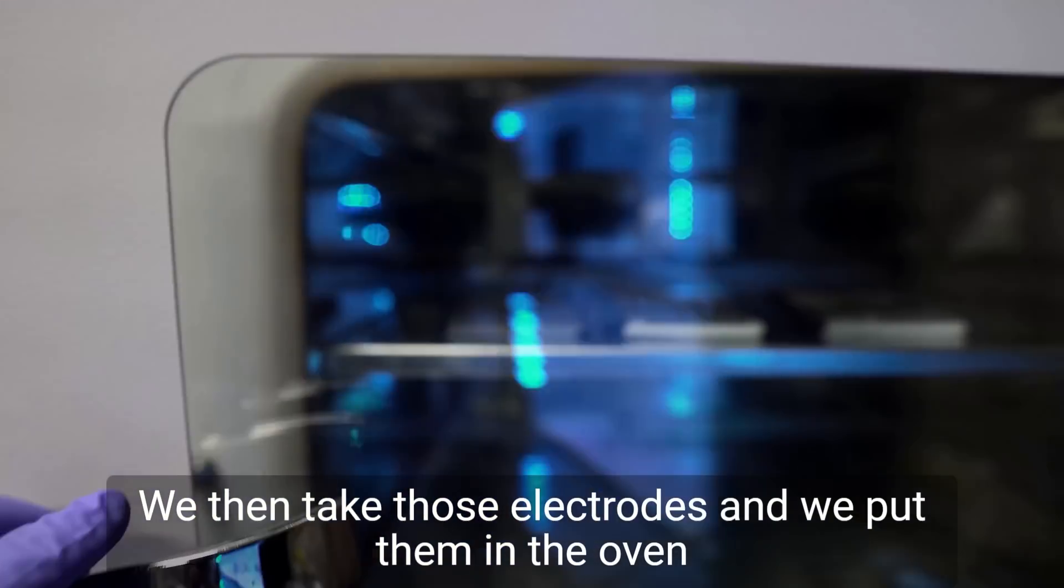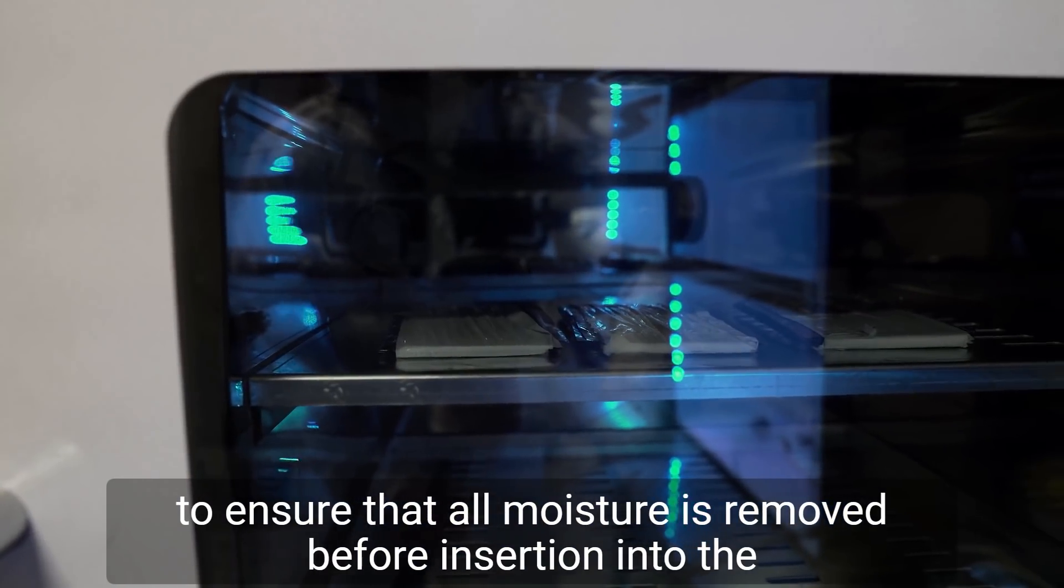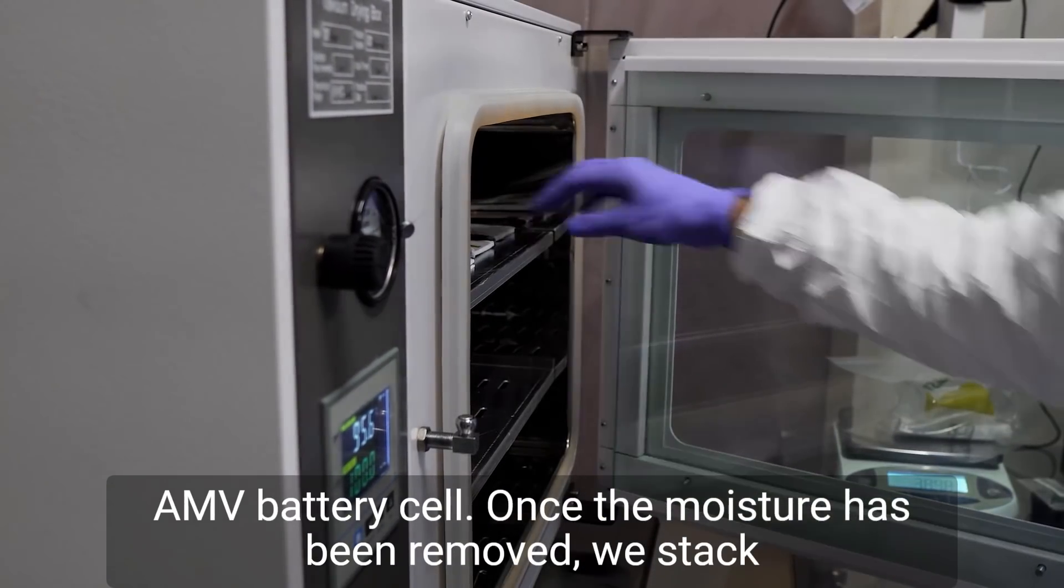We then take those electrodes and put them in the oven to ensure that all moisture is removed before insertion into the AMV battery cell.